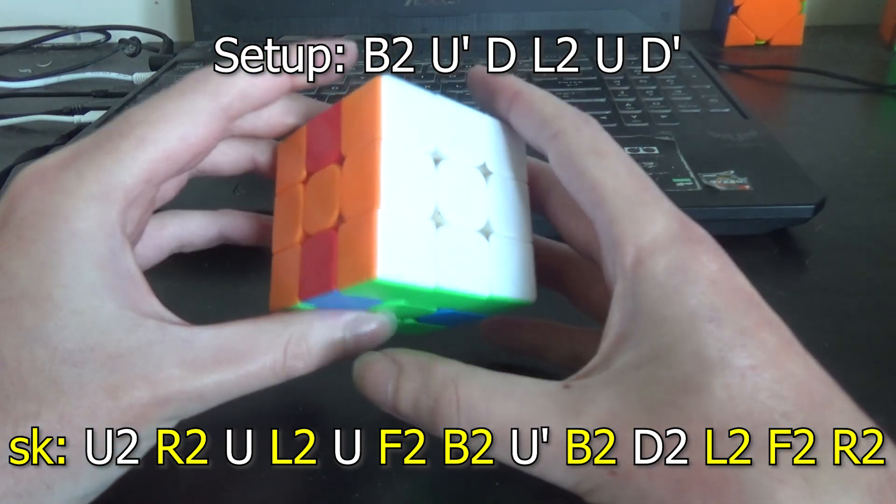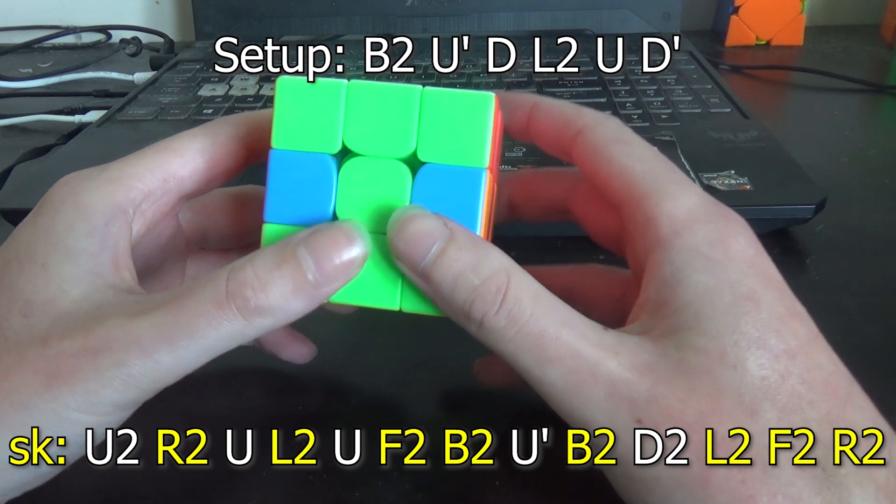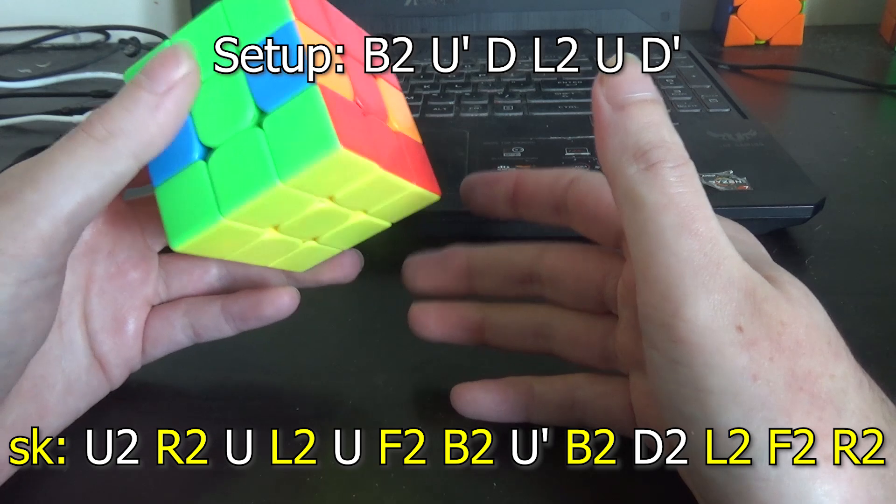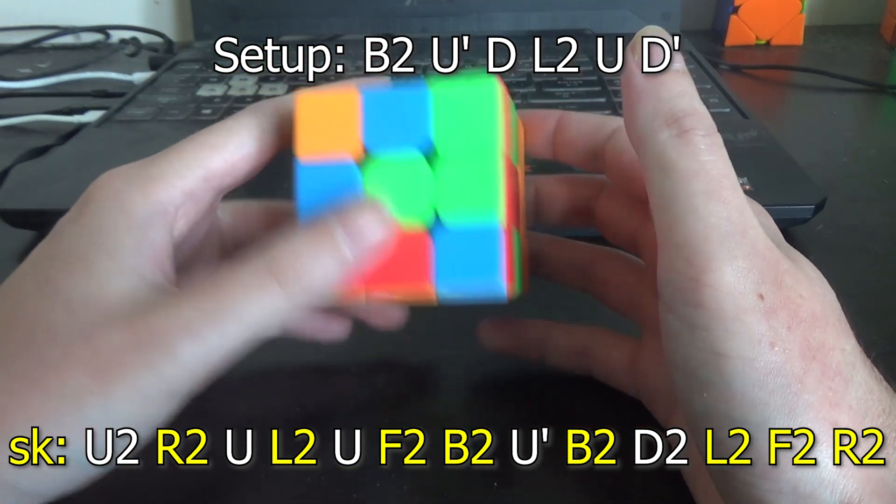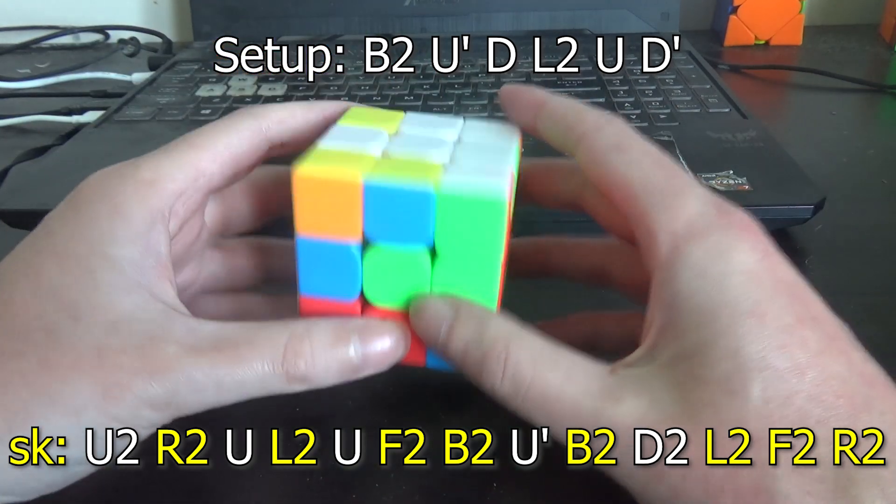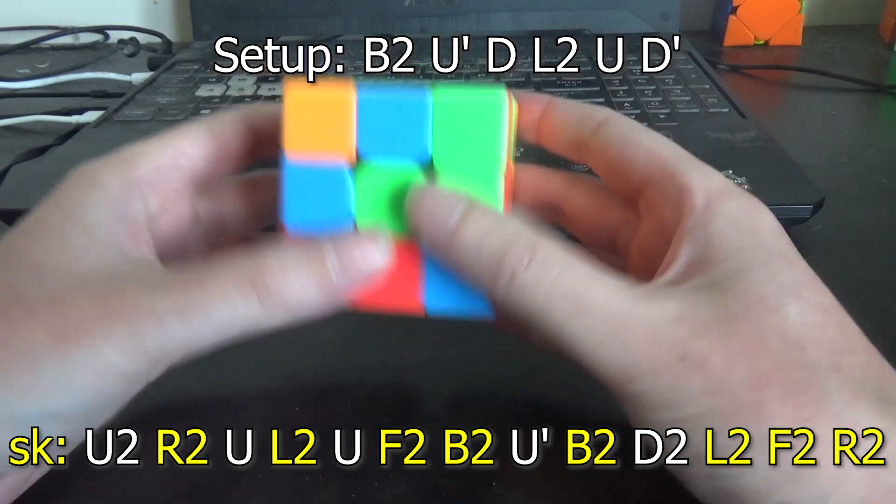But it does end with a 2E2E which potentially means that we could unwiden the first U2 and widen the D2 to solve it. You don't necessarily need to be thinking about stuff like that. You could just try brute forcing every combination of slices, but it's just going to save you a little bit of time.